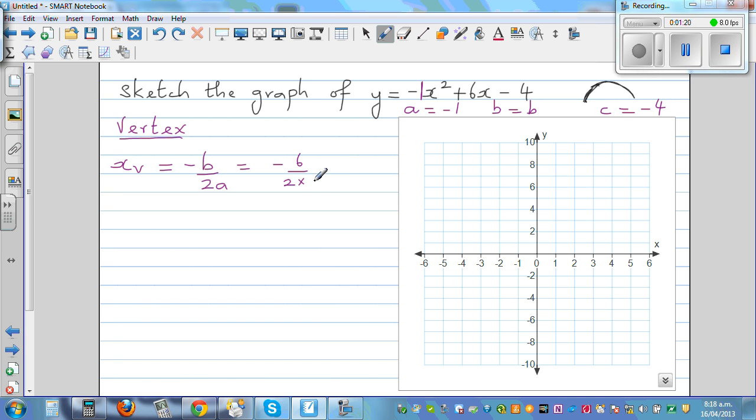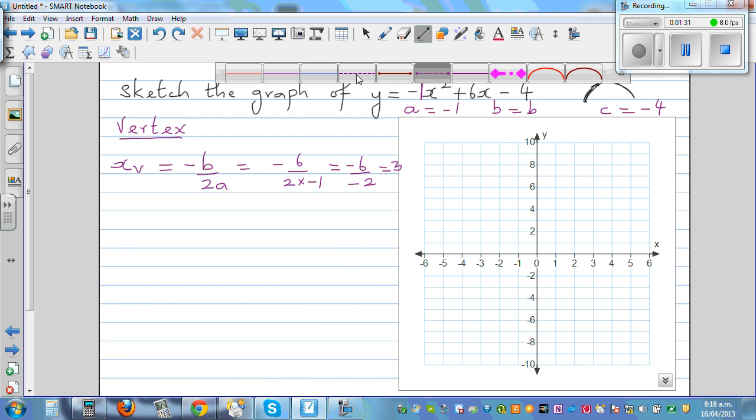So the line of symmetry is passing through 3. So you can draw the line of symmetry first. This is your line x equals 3.